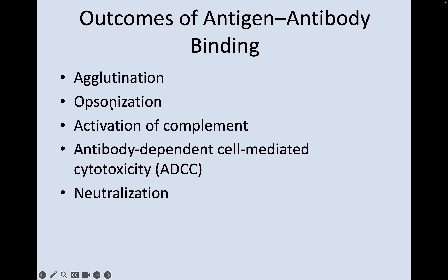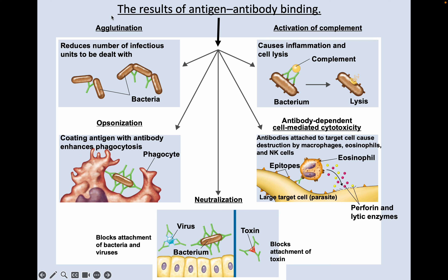There are five different outcomes when an antigen and an antibody bind: agglutination, opsonization, activation of complement, antibody-dependent cell-mediated cytotoxicity, and neutralization. Agglutination reduces the number of infectious units to be dealt with — initially there were five bacteria, but because of the antibodies they've been clumped into two groups, and two groups are easier to deal with than five.